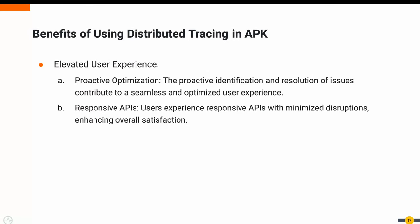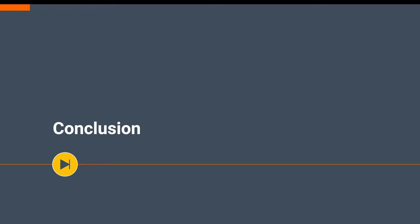Ultimately, the benefits of distributed tracing with WSO2 APK extend to the end users, enhancing their overall experience. The proactive optimization strategy ensures that issues are identified and resolved before they impact users, leading to an elevated and satisfying overall user experience. The distributed tracing capabilities of WSO2 APK offer more than just visibility into your API processes — they provide a proactive approach to performance management. Whether it's Jaeger, Zipkin, Azure, or OTLP, the integration is seamless, offering you the flexibility to choose the right tool for your API ecosystem. Remember, it's not just about identifying issues — it's about leveraging insights to enhance your API ecosystem's overall efficiency and reliability.